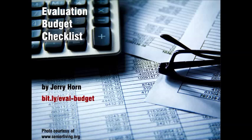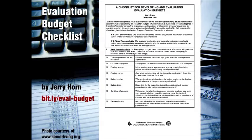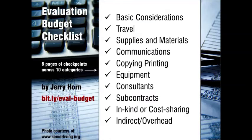We actually have another checklist that goes into much greater detail — the evaluation budget checklist by Jerry Horn. It's six pages long with checkpoints across ten categories, with prompts to help the user think through all types of different costs. The first category covers basic considerations, like whether the contract will be a fixed price contract or cost reimbursable, as well as prompting the user to identify a key contact person in each involved organization who's going to deal with budgeting matters.